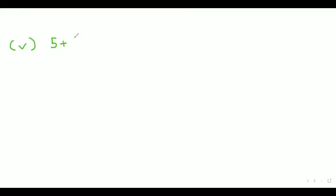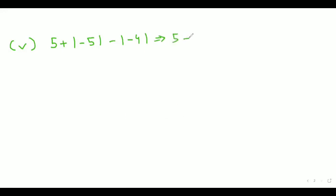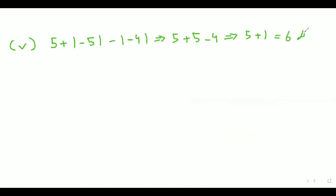Now the fifth part is: 5 plus absolute value of minus 5, minus absolute value of minus 4. First, we write 5. If minus 5 is coming out from the absolute value, it will become positive 5. Similarly, if minus 4 is coming out from the absolute value, it will become positive 4. But outside the absolute value there is a negative sign, so it will become minus 4. In our next step, plus 5 and minus 4 will become 1. So 5 plus 1 equals 6, which is our answer.